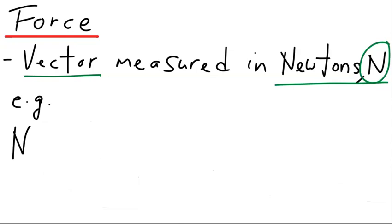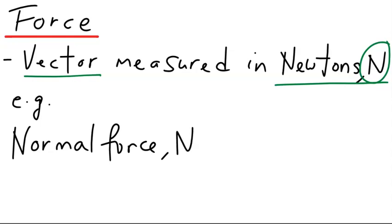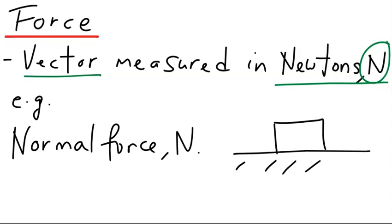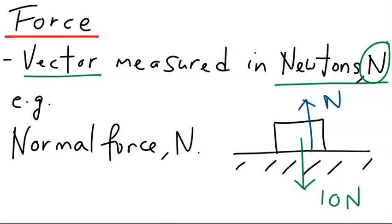Another example is the normal force. Normal force N is a force that results when something is pressing against a surface. Let's say you have an object, a box of some kind. The weight of this box is pressing against this table — let's say the weight is 10 Newtons. The surface of that table will in turn press against the box in an opposite direction. This upward force, shown by this blue arrow, is the normal force N, and the magnitude is also 10 Newtons.